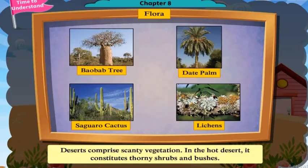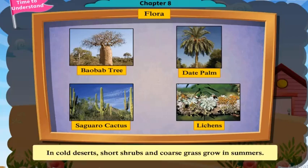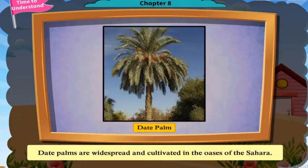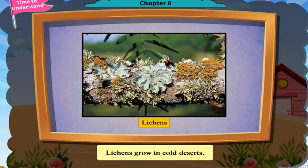Deserts comprise scanty vegetation. In hot deserts, it constitutes thorny shrubs and bushes. In cold deserts, short shrubs and coarse grass grow in summers. Date palms are widespread and cultivated in the oases of the Sahara. Lichens grow in cold deserts.